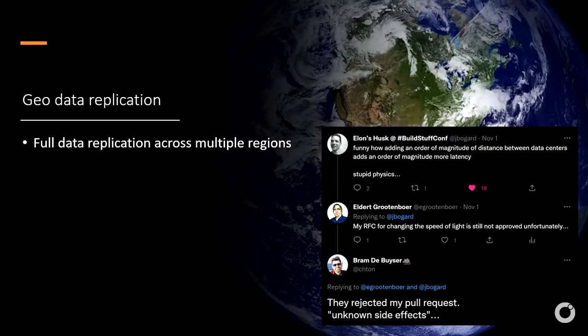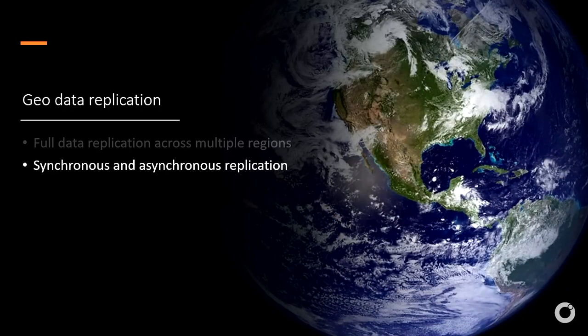There are some caveats to geo data replication. When you commit something to your primary, we have to replicate it to secondary, wait for it to be committed there, and wait for the response back. We can't break the laws of physics, so we're introducing two replication modes. Synchronous replication gives you RPO zero — zero message loss. Your producer commits to primary, we synchronize to secondary (or multiple secondaries), wait for quorum, then send back the acknowledgement. This introduces extra latency.